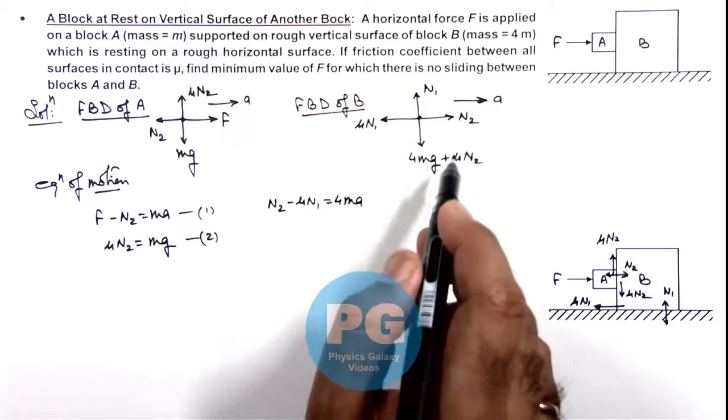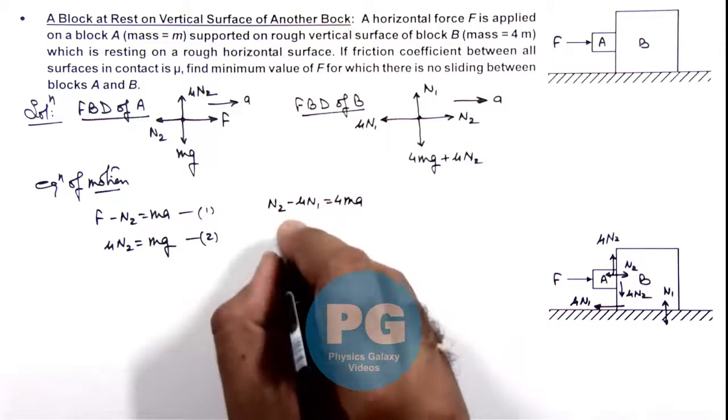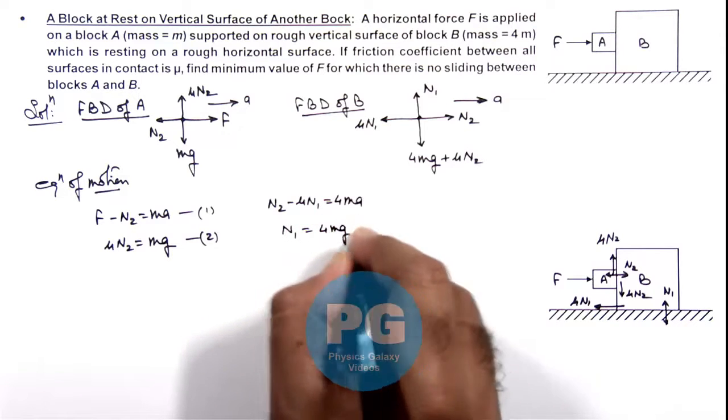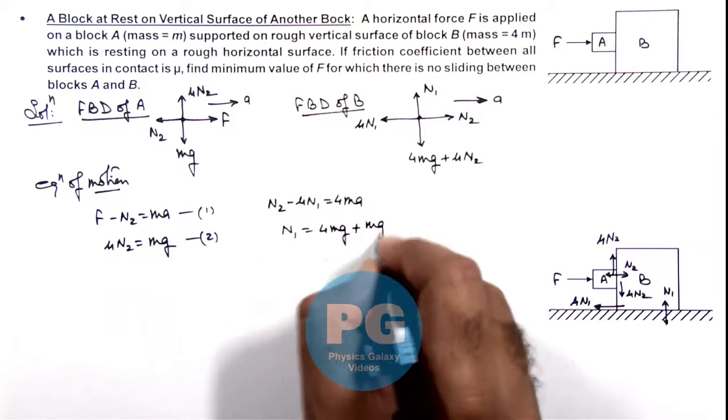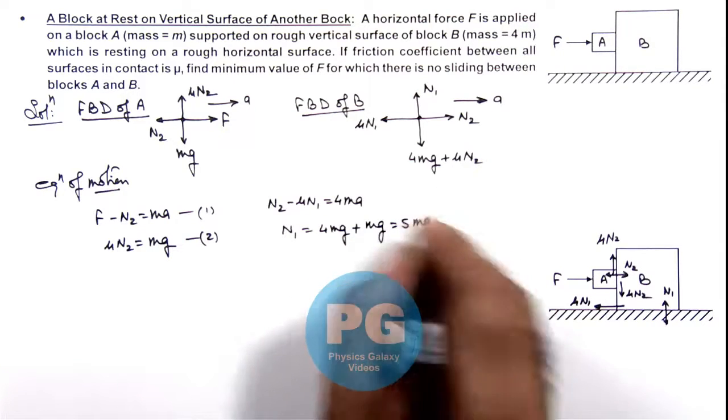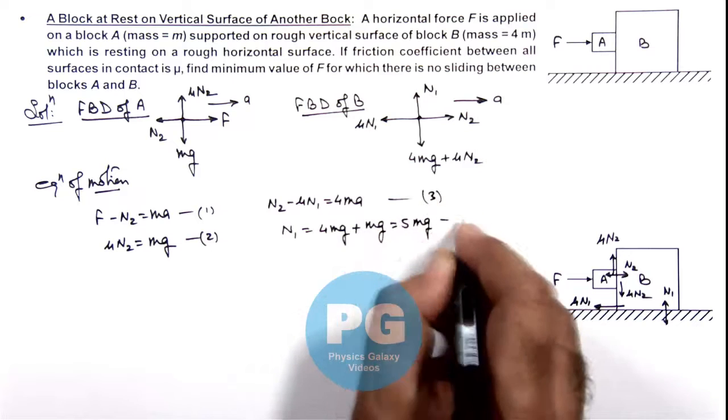In vertical direction it is balanced so we can write N₁ = 4mg + μN₂. Here μN₂ is already given as mg so this can be taken as directly 5mg. Say these are our equations 3 and 4.